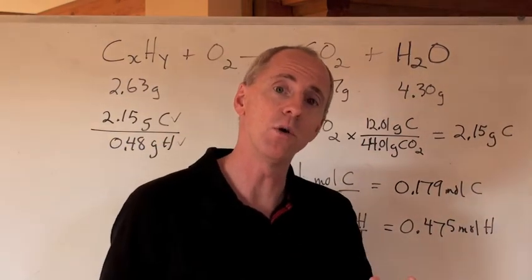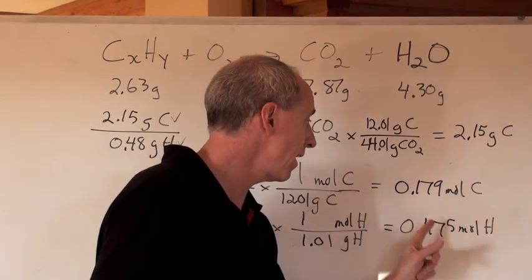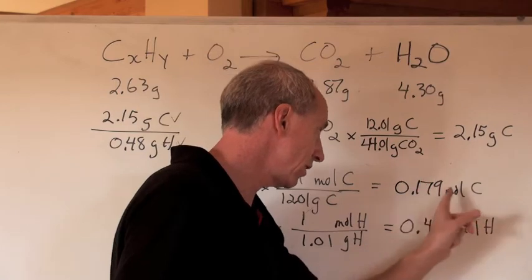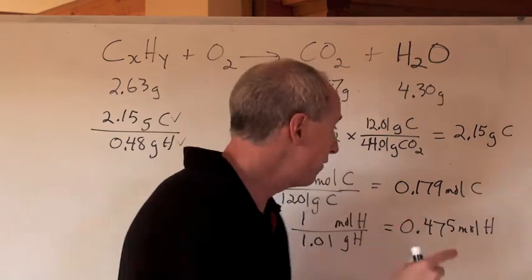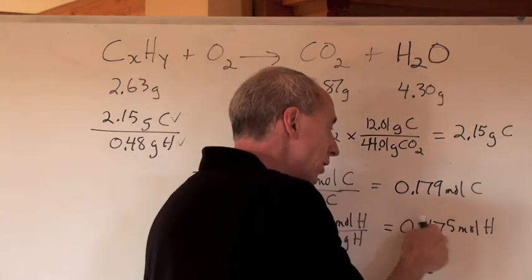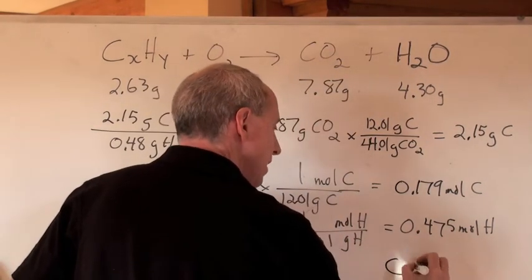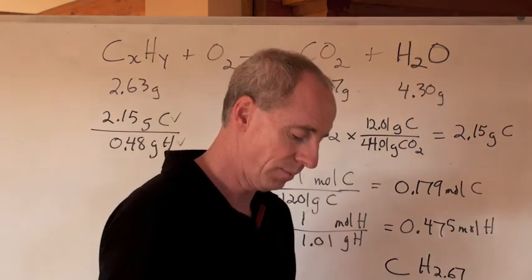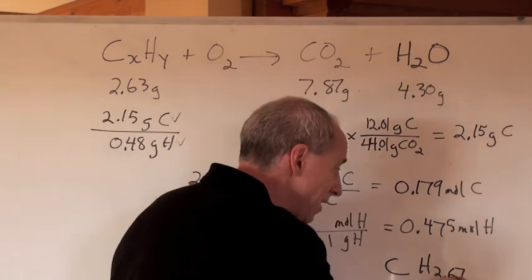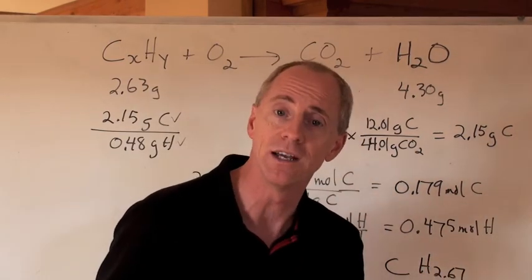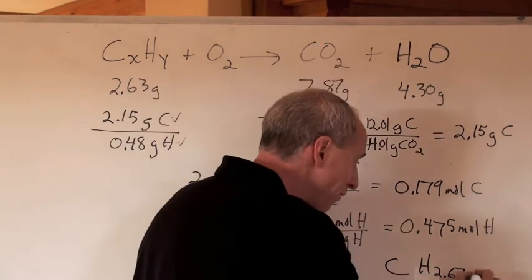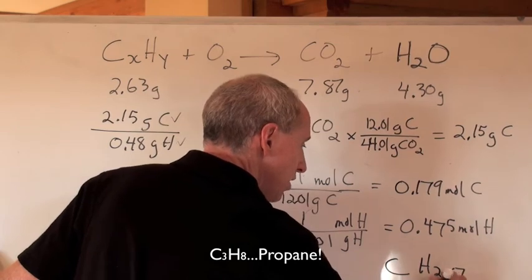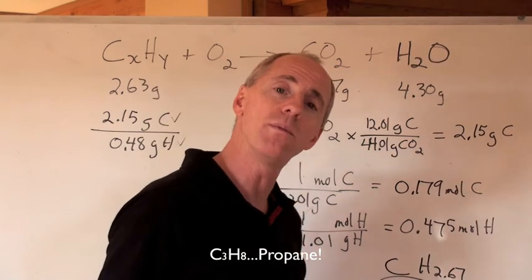For the empirical formula, take the smallest mole quantity and divide it into each number. Dividing 0.179 into itself gives 1 carbon. Dividing 0.179 into 0.475 gives 2.67 moles of hydrogen. That's not a whole number, but 0.67 is two-thirds, so it's a third ratio. Multiply everything by 3, and you get C3H8. That is the empirical formula.